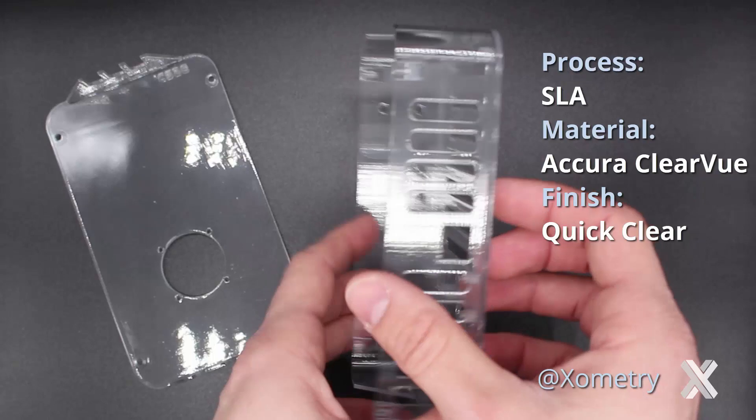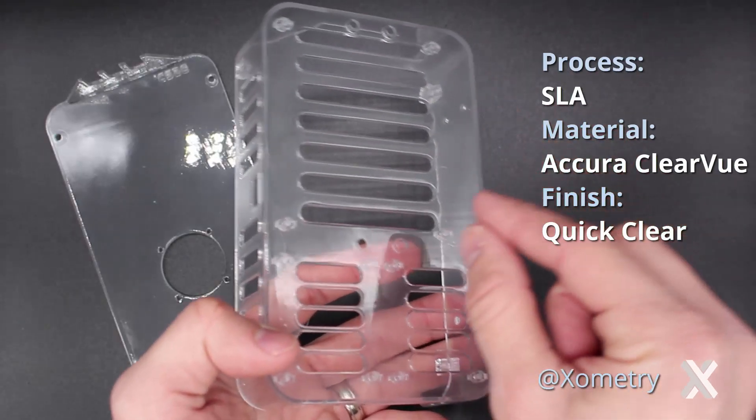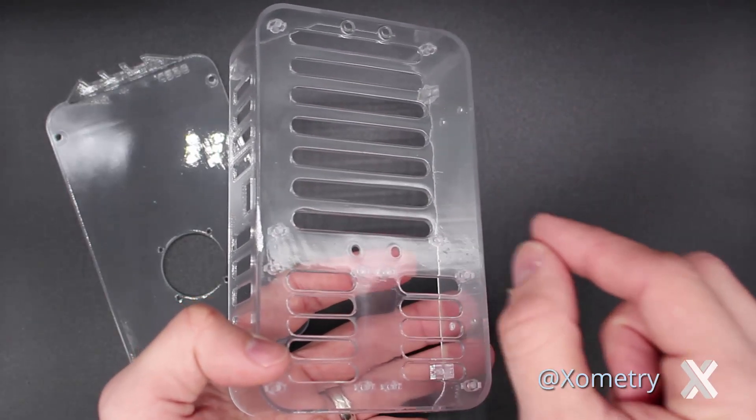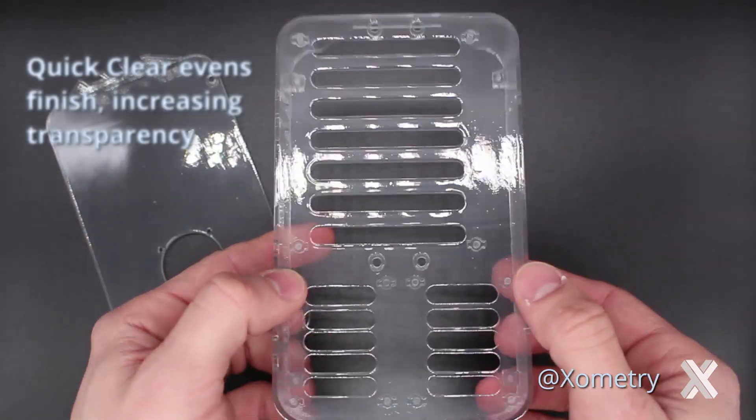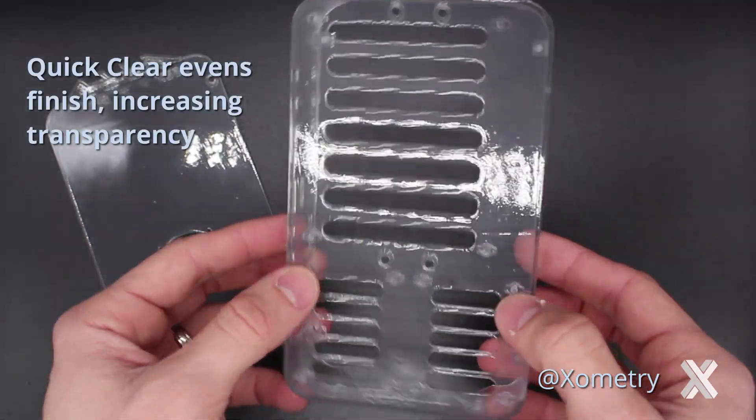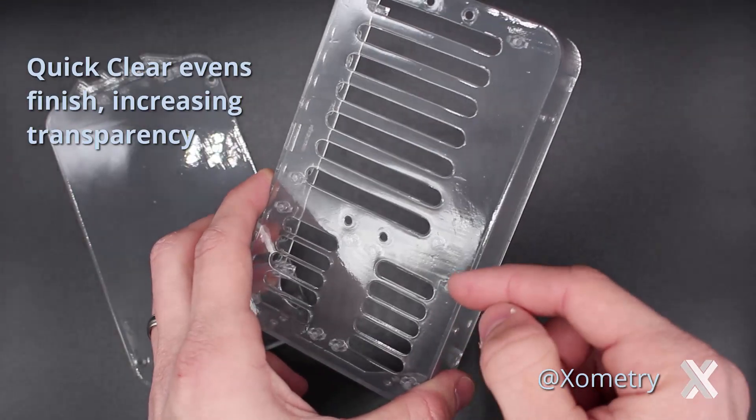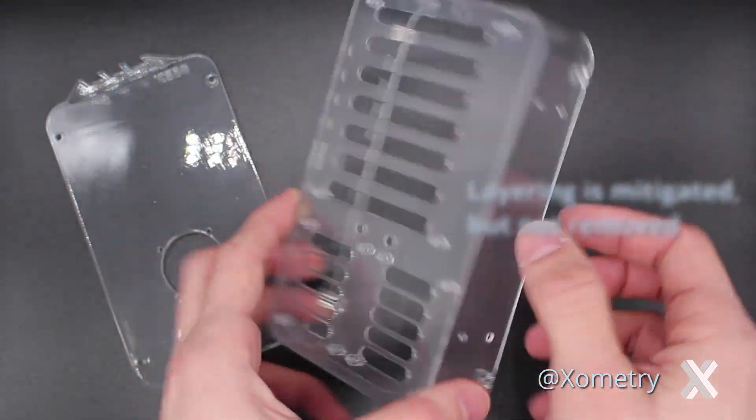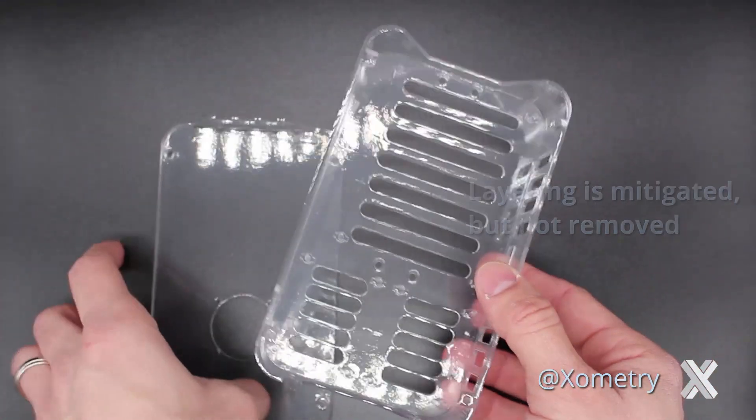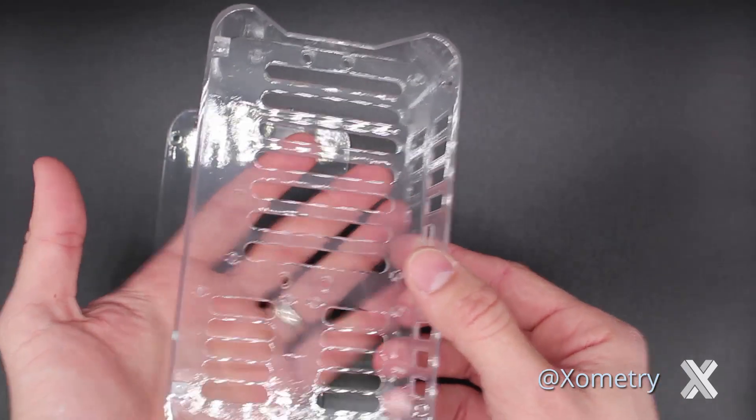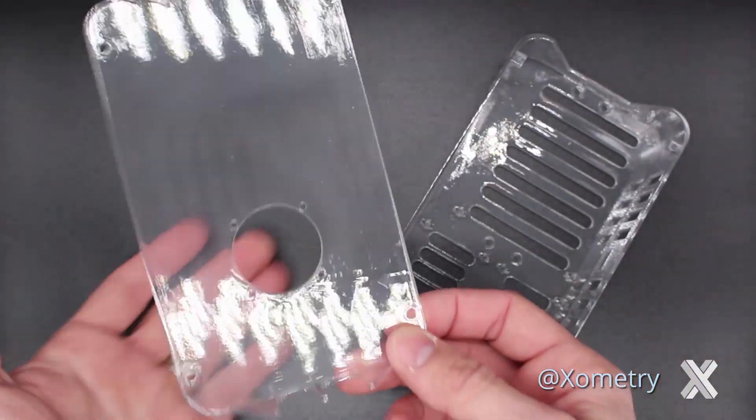And what it does is it actually fills any little pore deformation on the SLA part and gives it a nice even finish. You'll see that you can still see some layer variations here from the actual printing process. But overall, you just have a remarkably clear part with very quick processing.